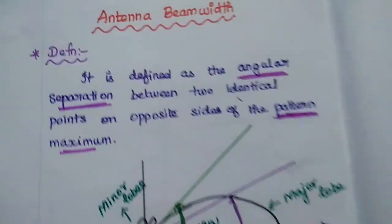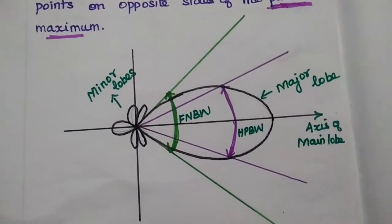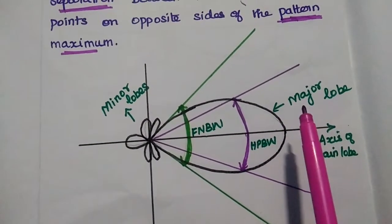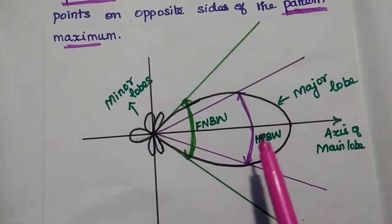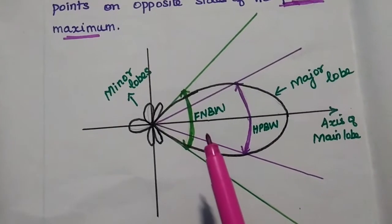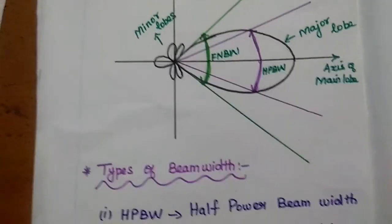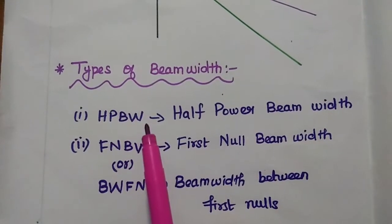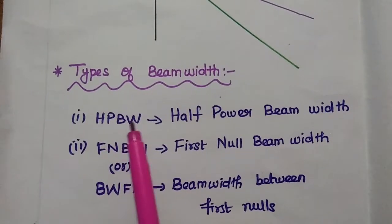The general diagram of the radiation pattern has a major lobe, which represents the maximum radiation in a particular direction. We are going to find out our beam width in this major lobe area. There are two types of beam width available. One is half power beam width, represented as HPBW.